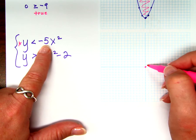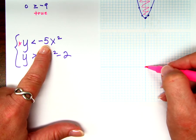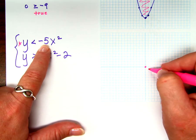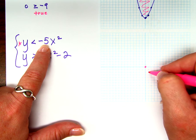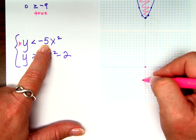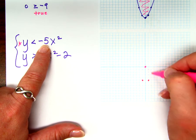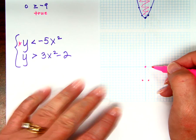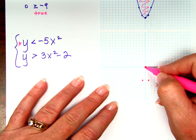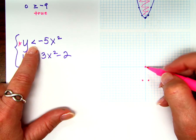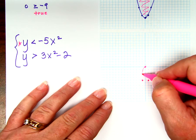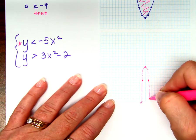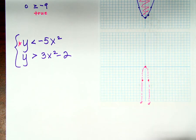Since it's not parent function shape, instead of going over 1 down 1, I'm going to go over 1 down 1 times 5, which is down 5. I also know the symmetric point. Instead of going over 2 down 4, I go over 2 down 4 times 5, which is down 20 — I can't go down 20 on this graph. What kind of line do I draw? Dotted.